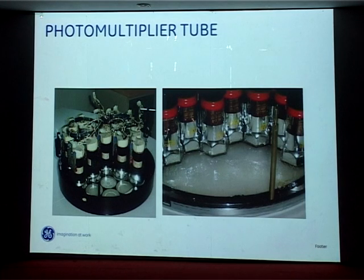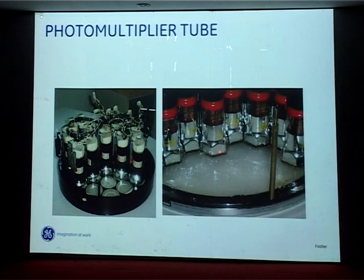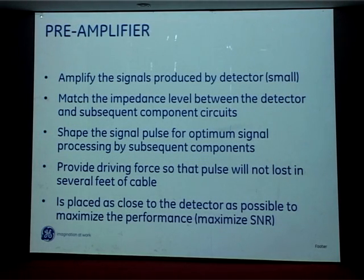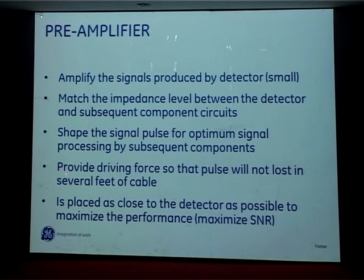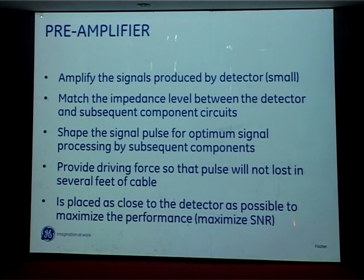This is how it looks inside an opened gamma camera — these are the photomultiplier tubes, and in the image you can see the photomultiplier tube, the crystal, and the optical coupling between them so there is no loss of light. The preamplifier amplifies the small signal produced by the detector, matches the impedance level between the detector and subsequent components, shapes the signal pulse, and provides a driving force so the pulse is not lost in the several feet of cable. It is placed as close to the detector as possible to maximize signal-to-noise ratio.